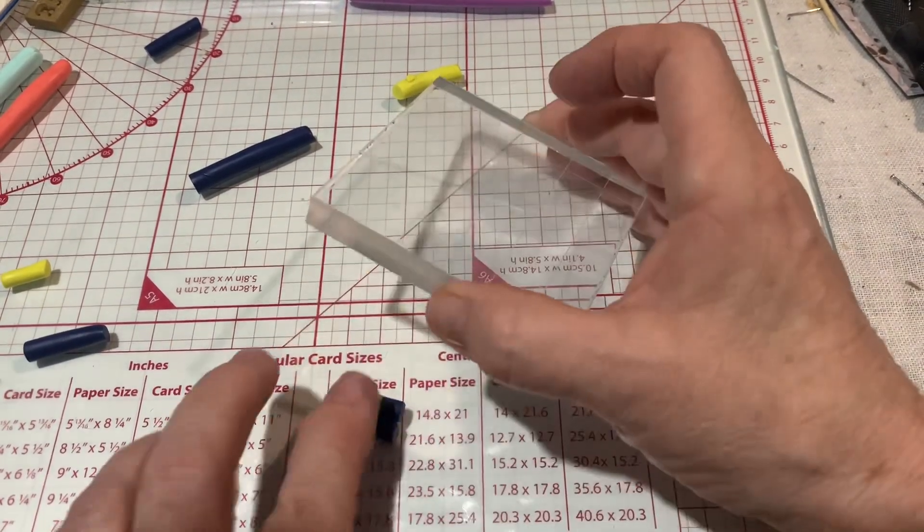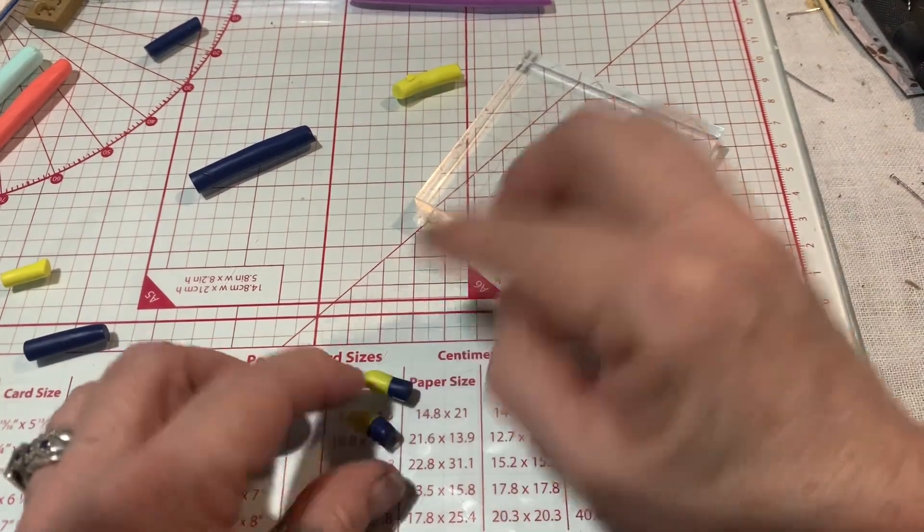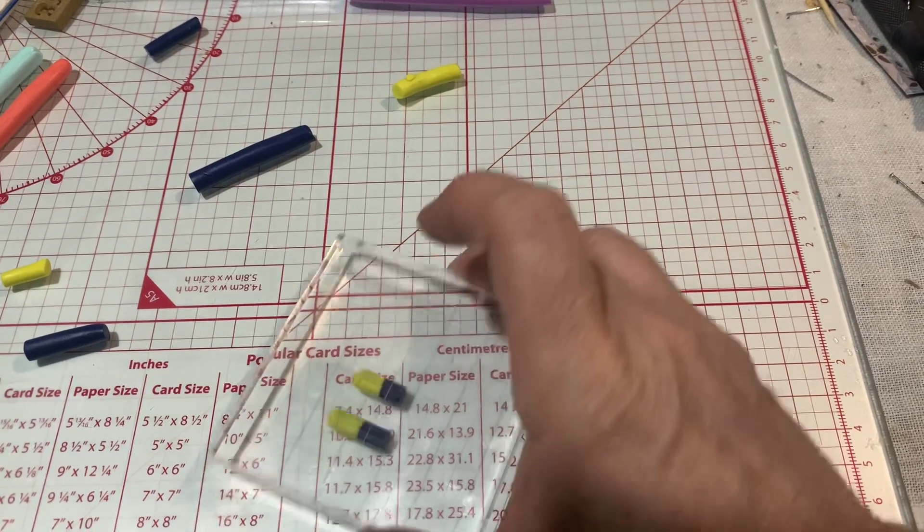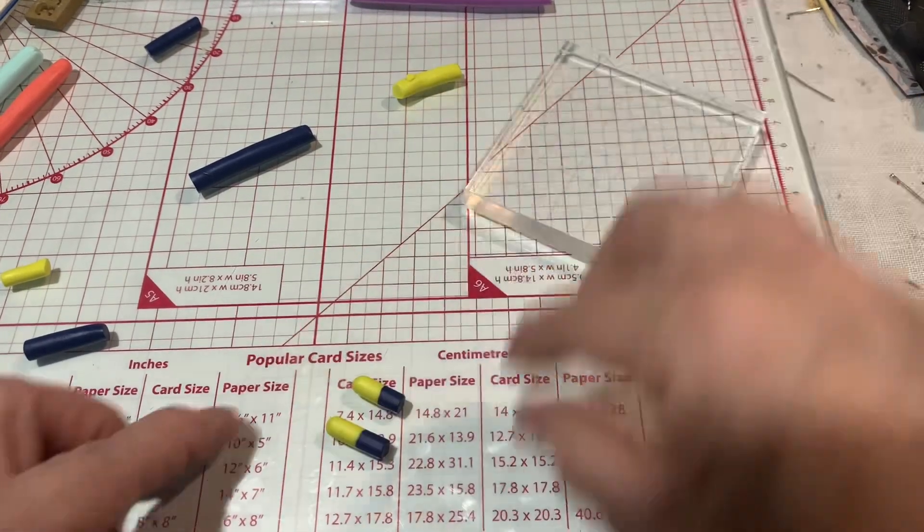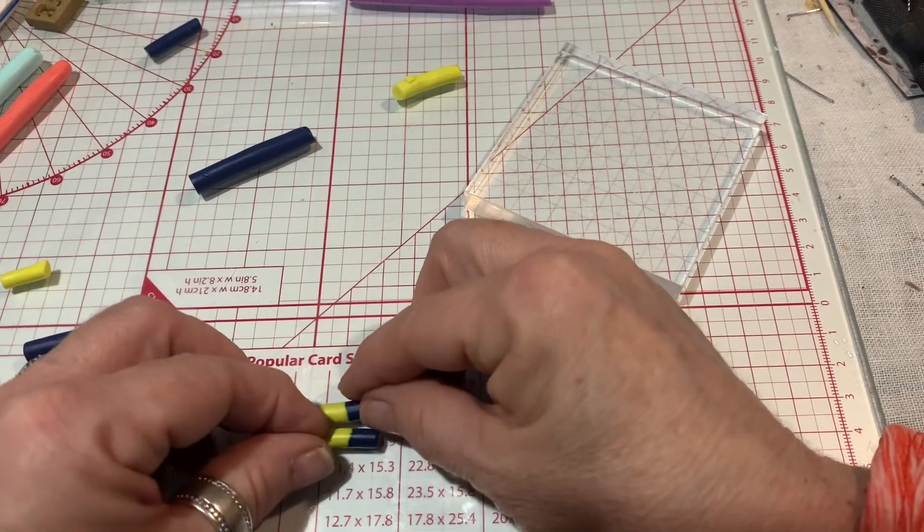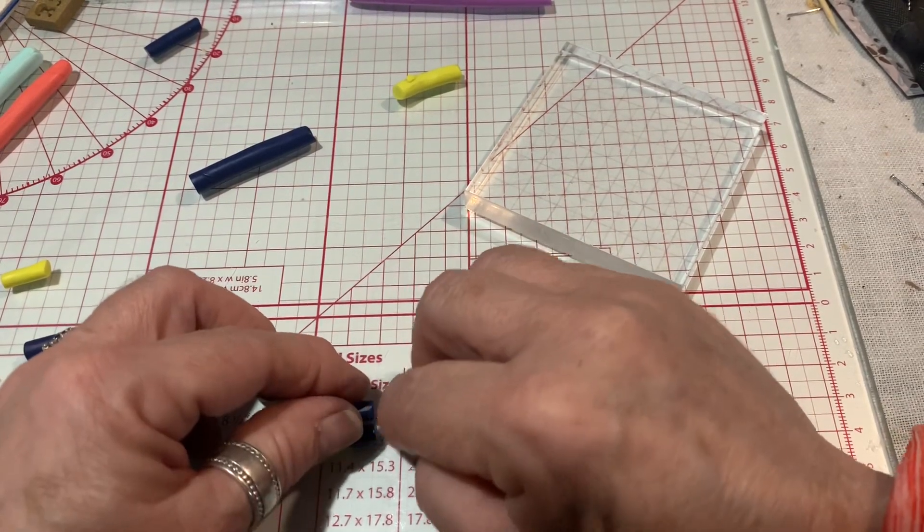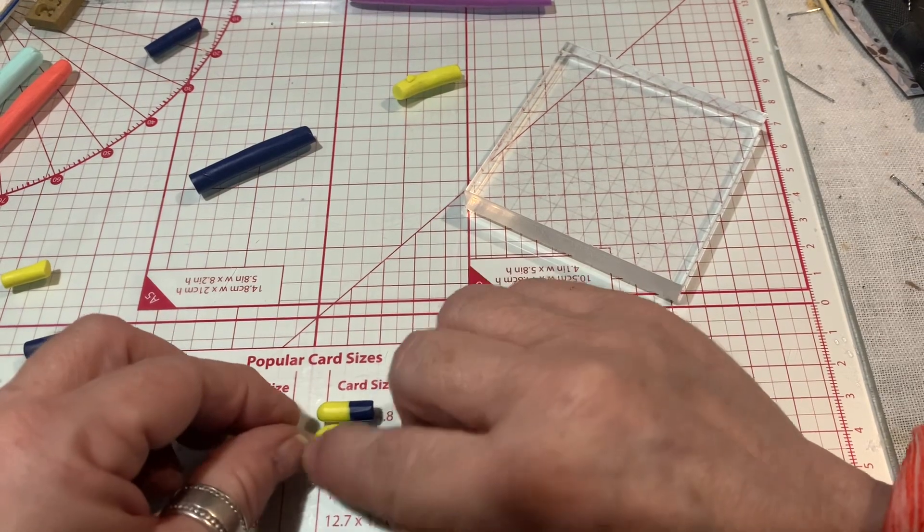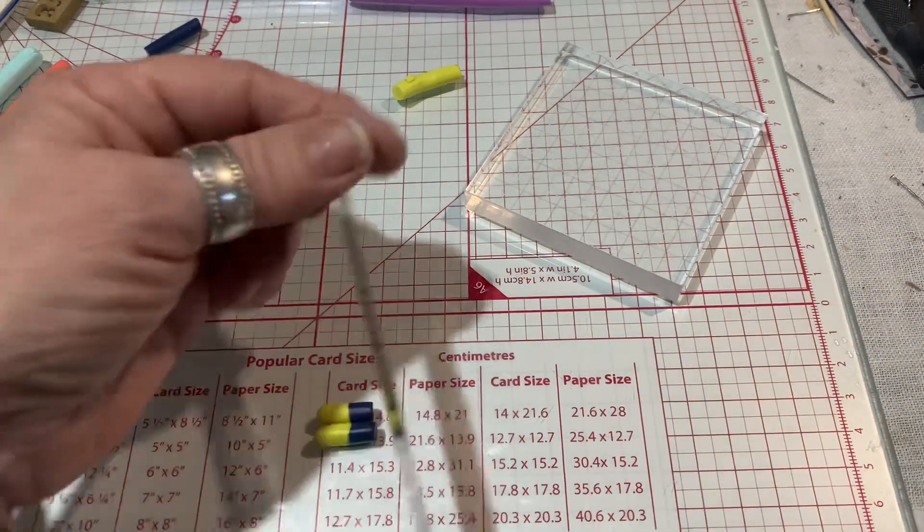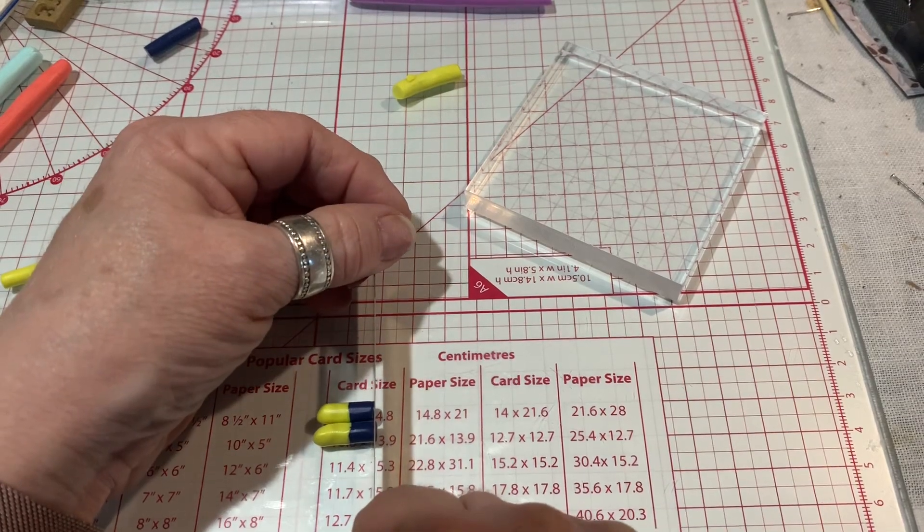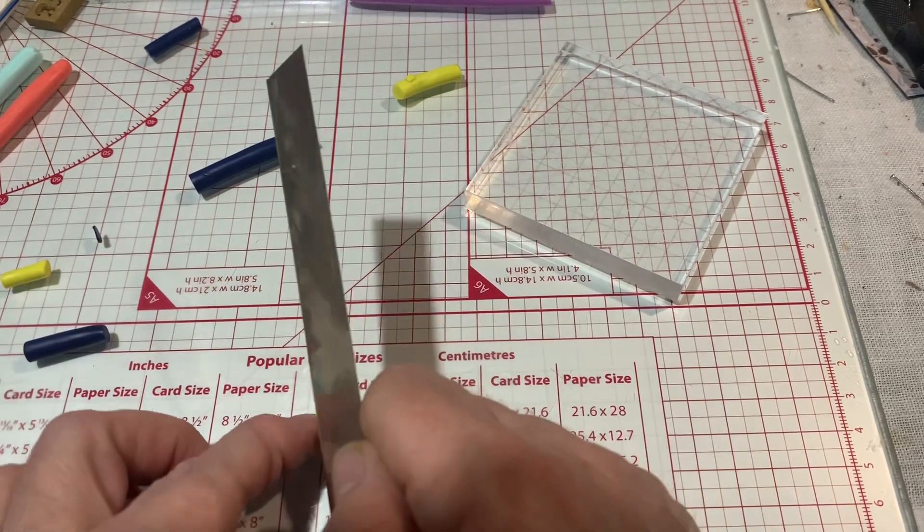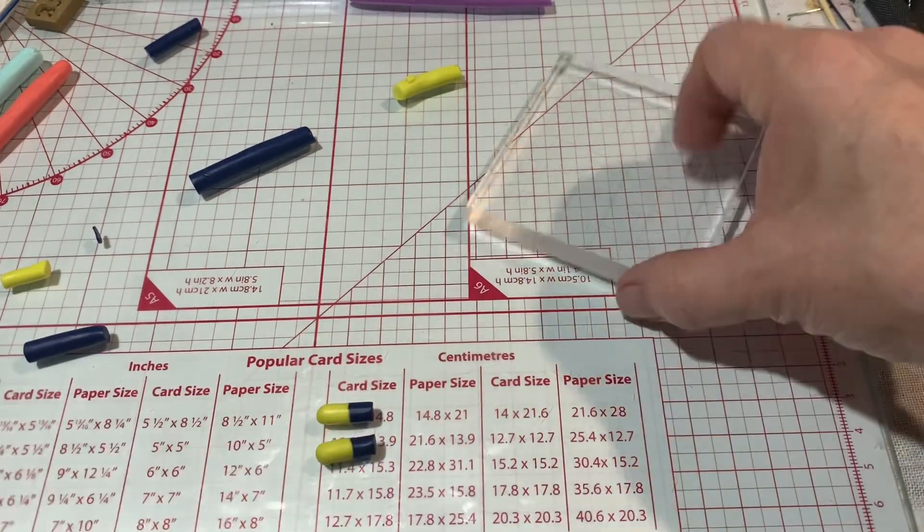Once I play with them a little bit, I want the shapes to be the same. One is a little bit bigger and that's just because of all the rolling and stuff I've done to it. So I'm going to snip off a little tiny bit on both ends. It's always something you could sand later too.